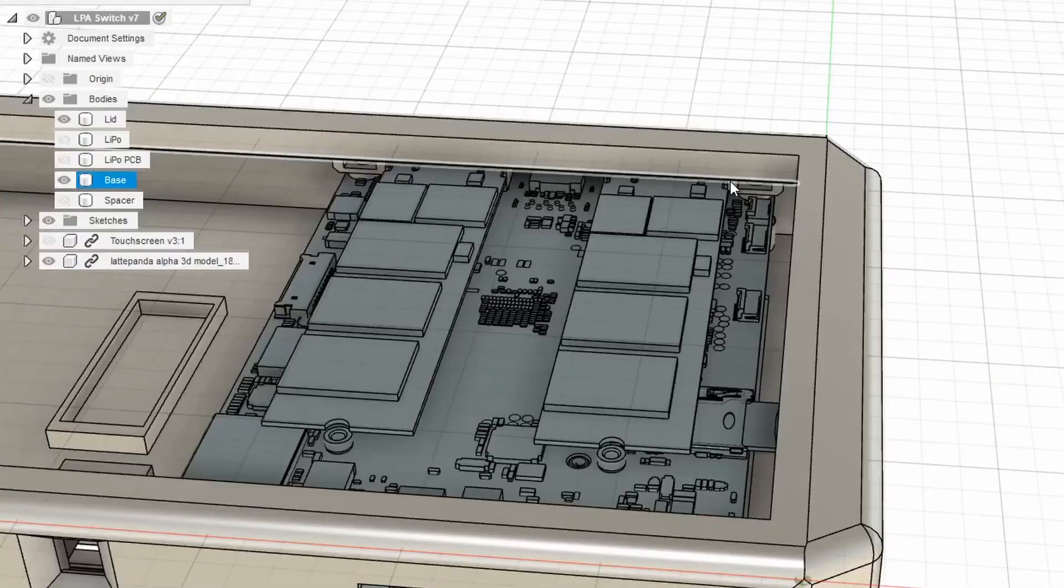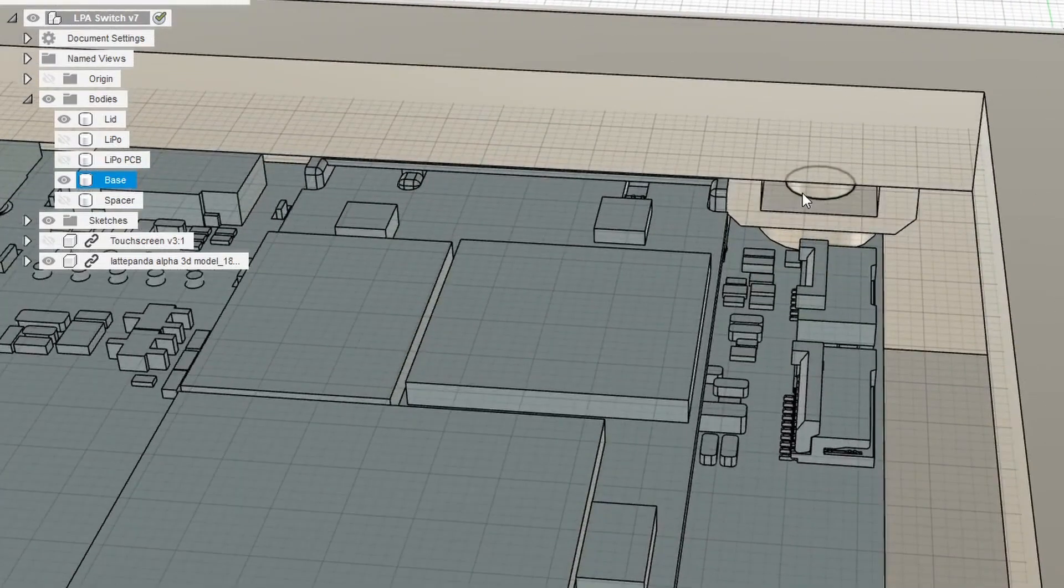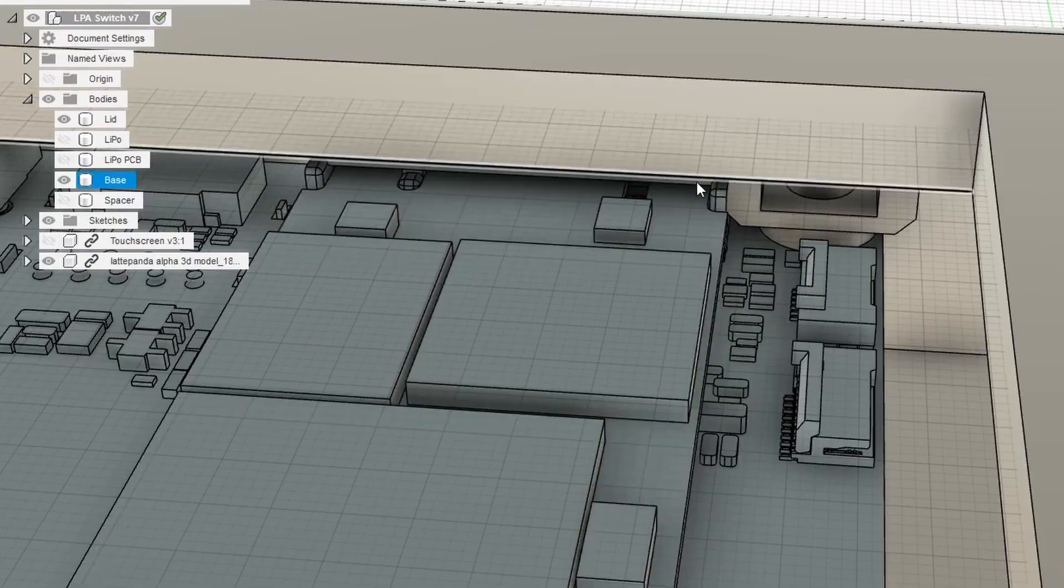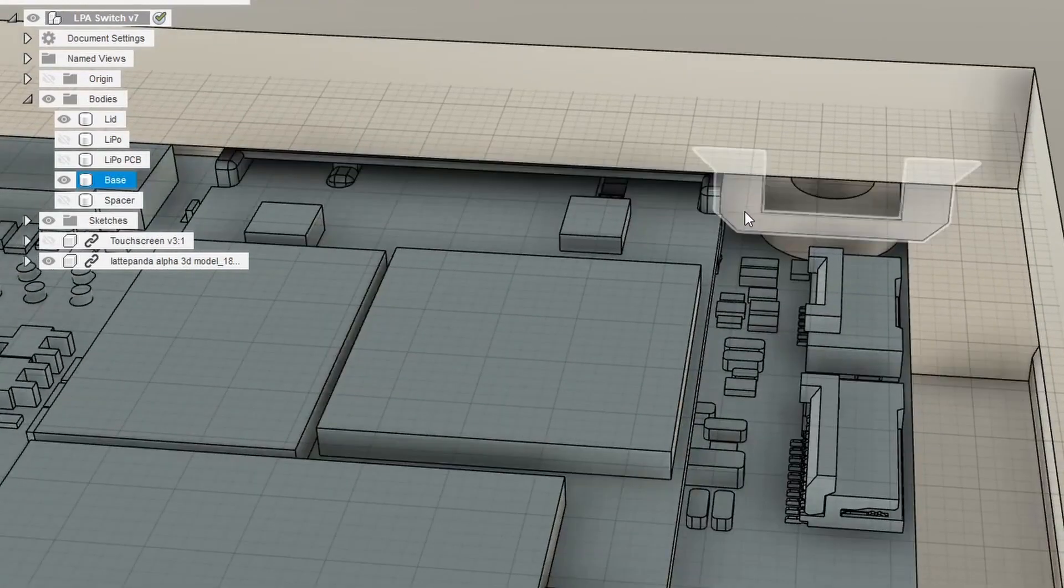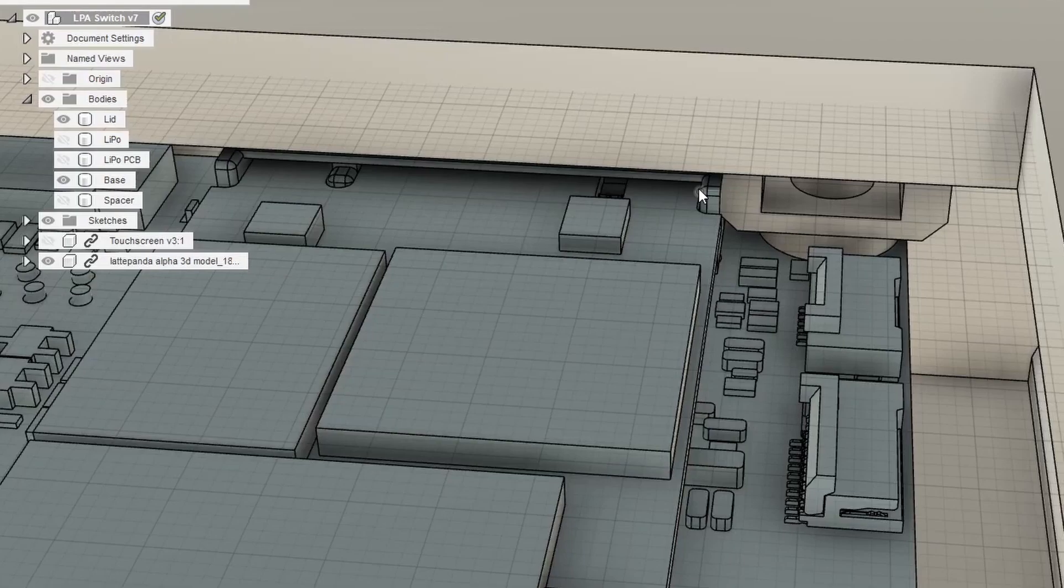In doing the final assembly video, I realized there was a bit of an interference issue. The M3 nut holder here interferes with the M.2 connector, and right before I released the files, I made the walls a little bit thicker to prevent any breaking, and it looks like there's some interference. I will send out a corrected file and will do a better job in the future of validating my designs. I apologize for any inconvenience this may cause you guys.